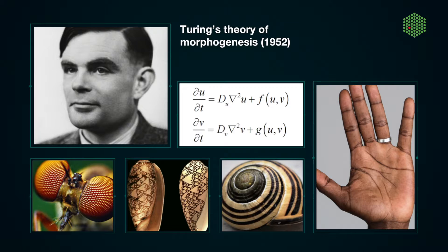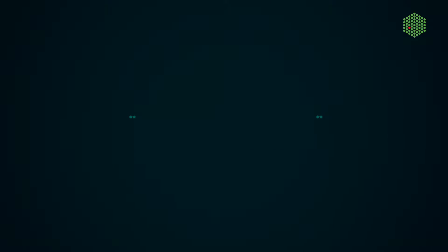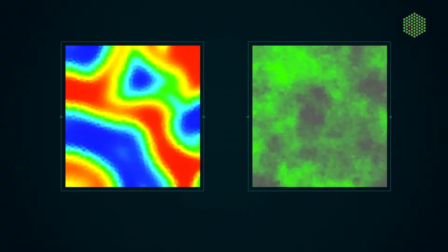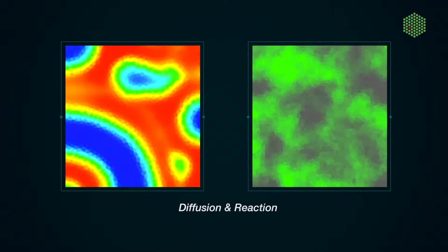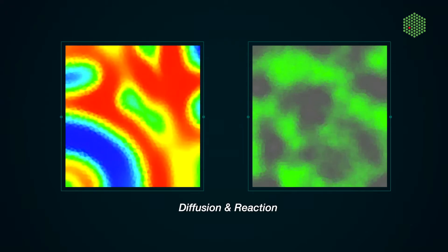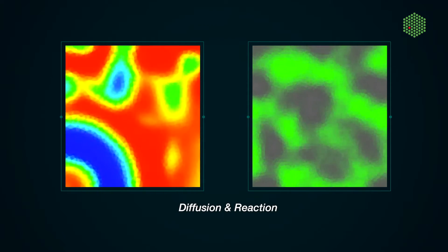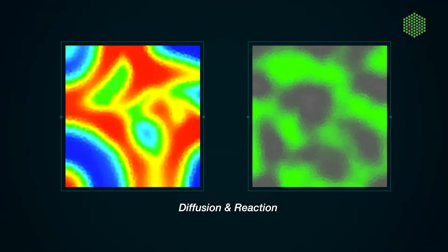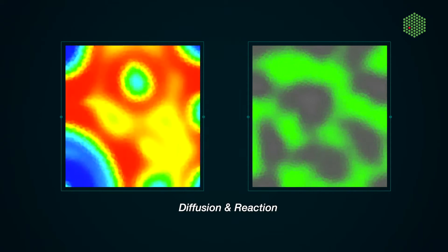The theory is based on two simple processes: diffusion, the way molecules spread out through space, and reaction, the way they chemically interact with each other.